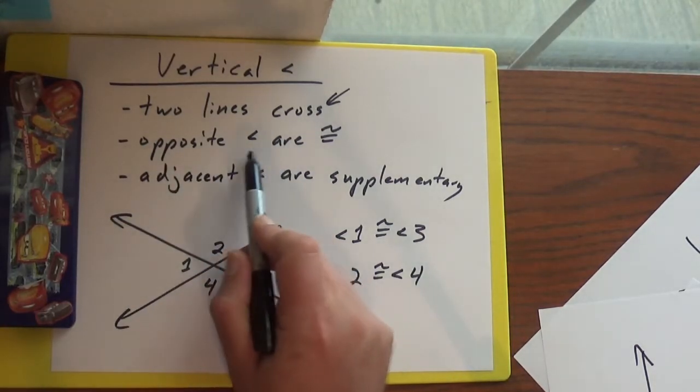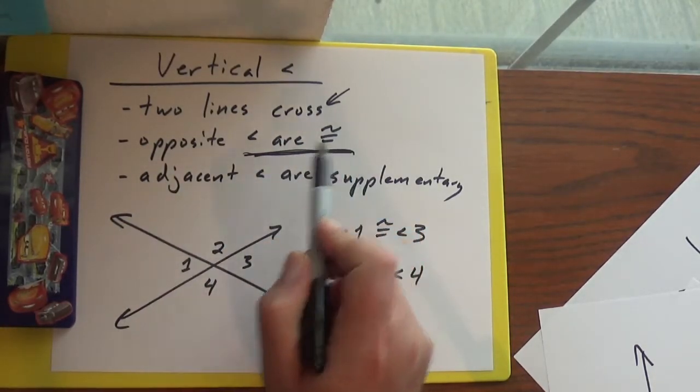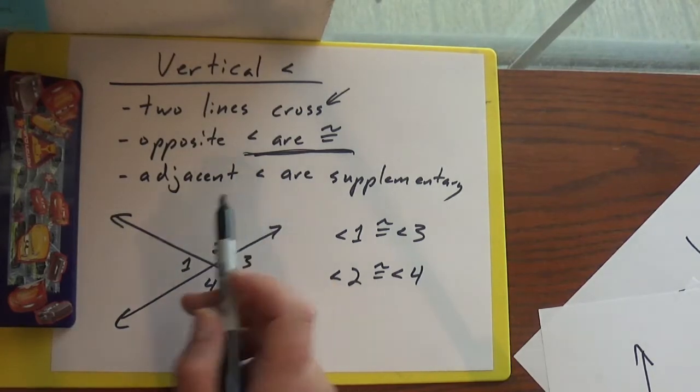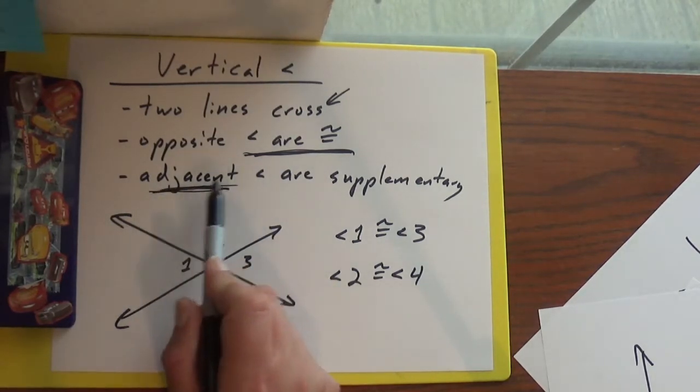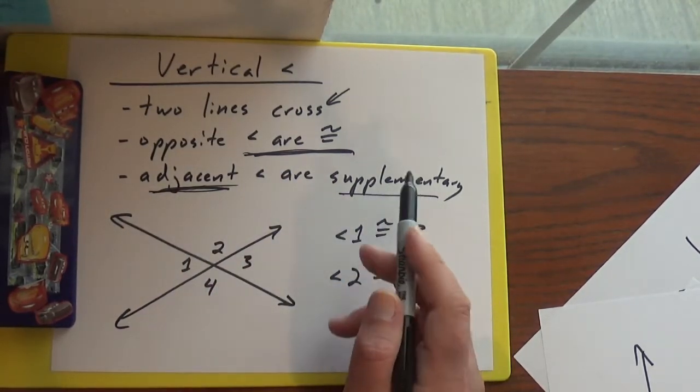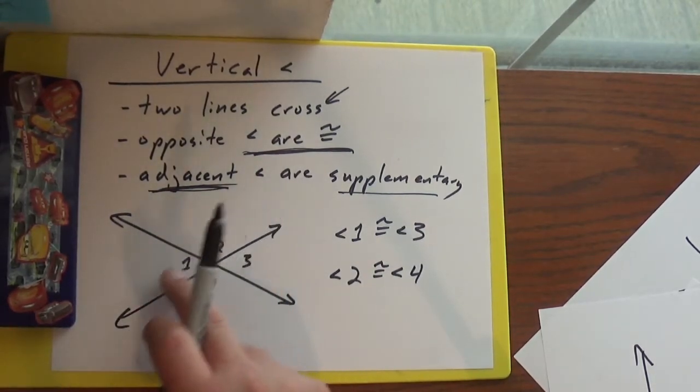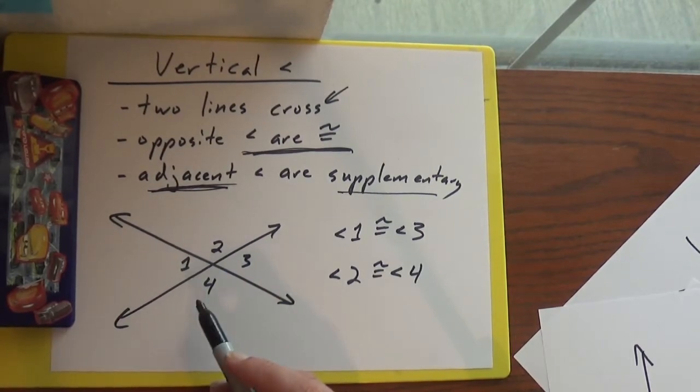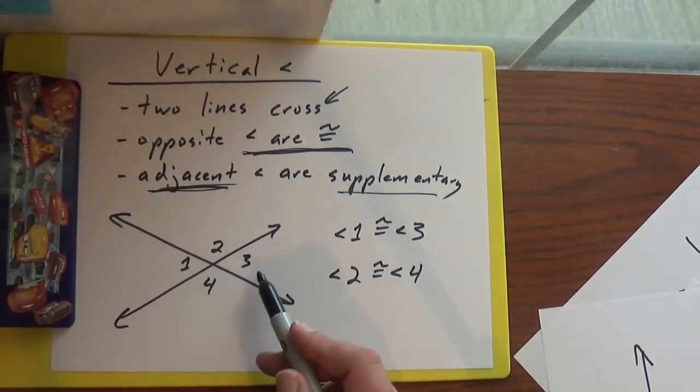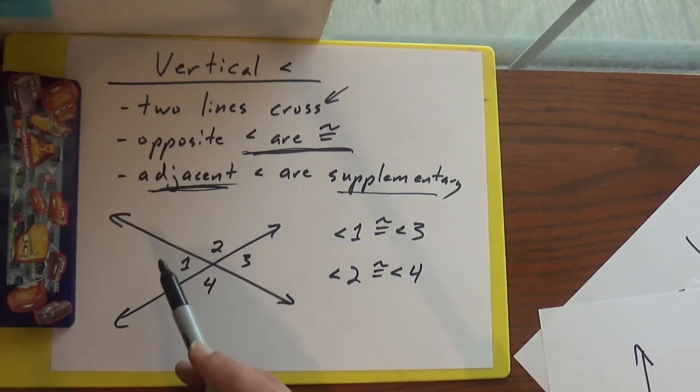Your opposite angles are going to be equal or congruent. And the adjacent angles are supplementary because you've got a line. So that means that angle one and angle two add up to 180. Angle four and angle three add up to 180. Angle two and angle three add up to 180. Angle one and angle four add up to 180.